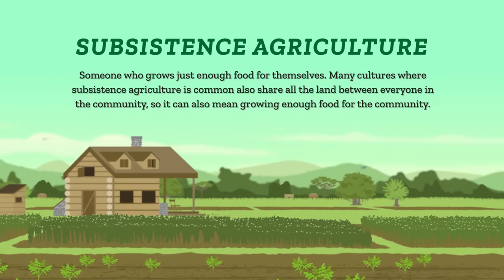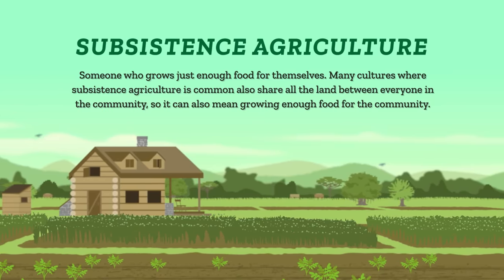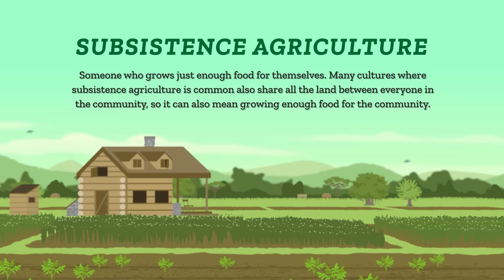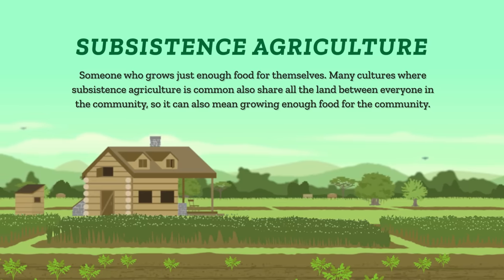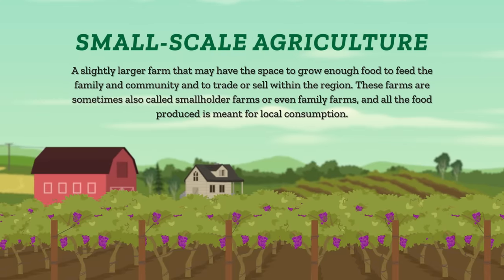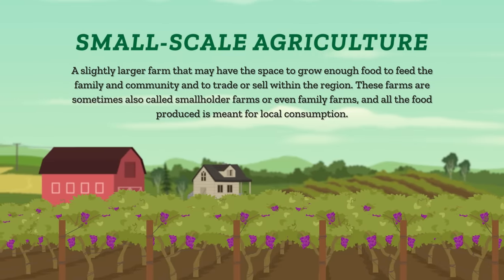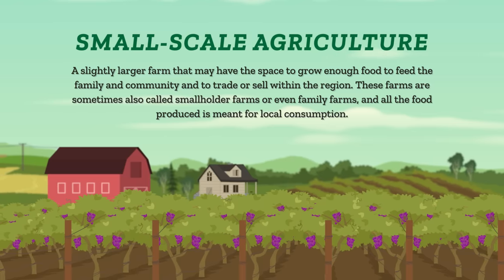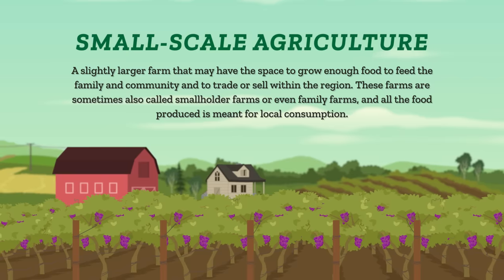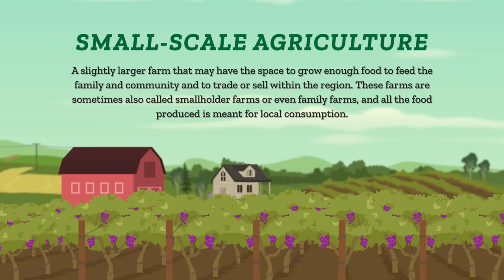In order to talk about and compare different types of agricultural ecosystems, in geography we use a lot of different categories and words to describe each technique. Whether it's aquaculture, herding, or some other method, each technique happens at a specific size or scale. On the smallest scale is subsistence agriculture, which means someone grows just enough food for themselves. Many cultures where subsistence agriculture is common also share all the land between everyone in the community, so it can also mean growing enough food for the community. A slightly larger farm may have the space to grow enough food to feed your family and community and to trade or sell within the region. This is called small-scale agriculture, and these farms are sometimes also called smallholder farms or family farms, with all food produced meant for local consumption.